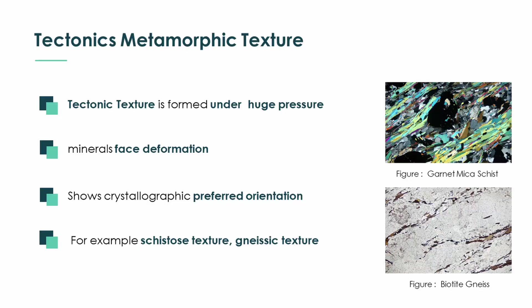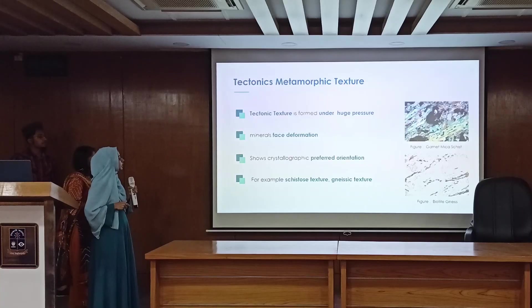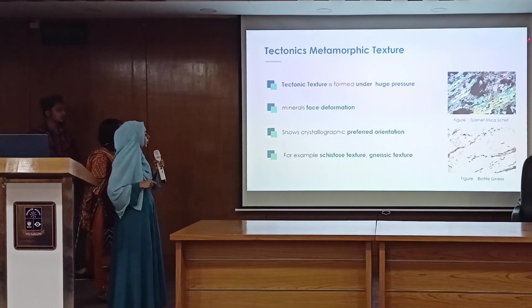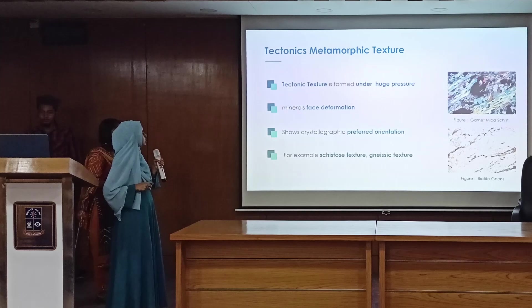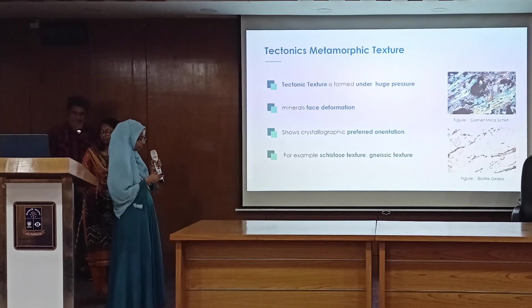Tectonic texture. Here are two examples: the top one is schistose texture and the bottom one is lineation texture of granoblastic and granuloblastic grains. Here you can see minerals showing a preferred planar orientation, as they have undergone high pressure and ductile deformation.